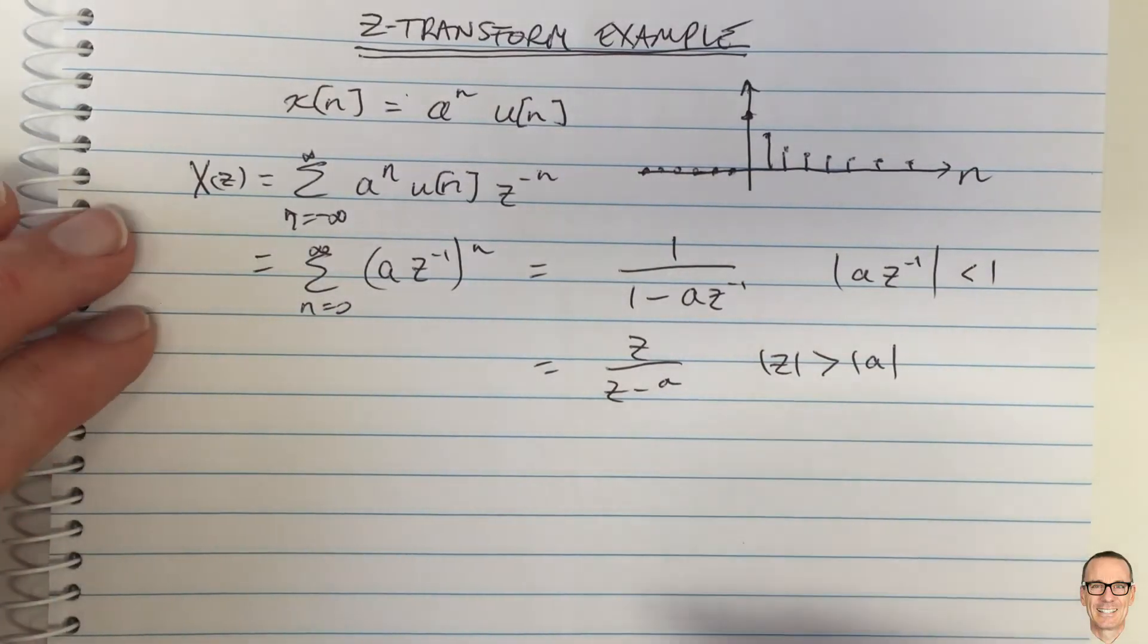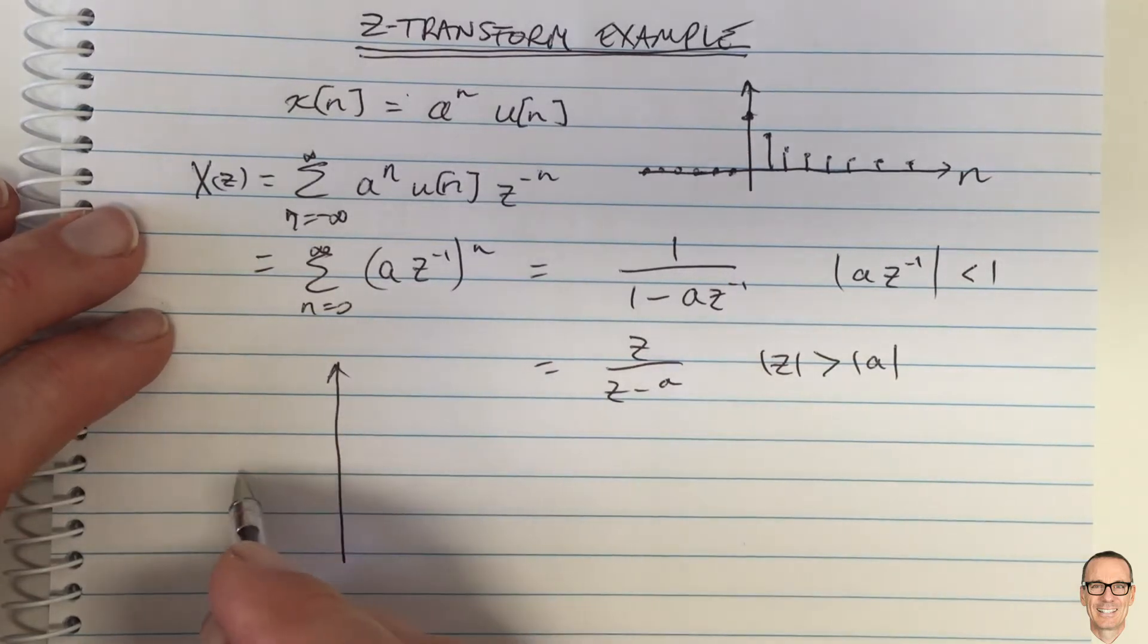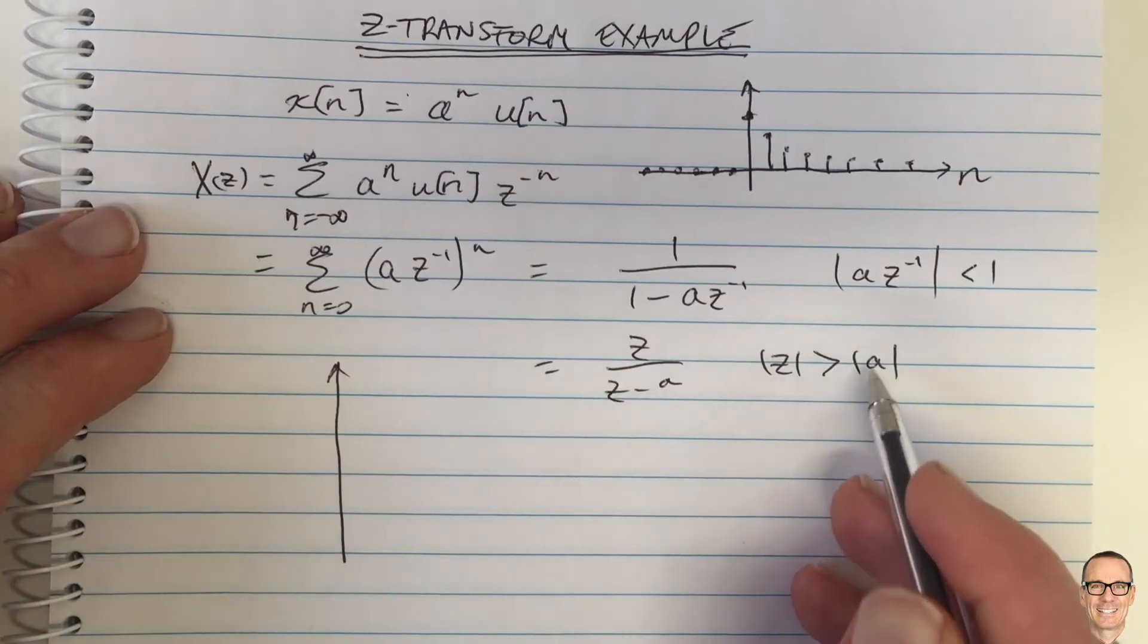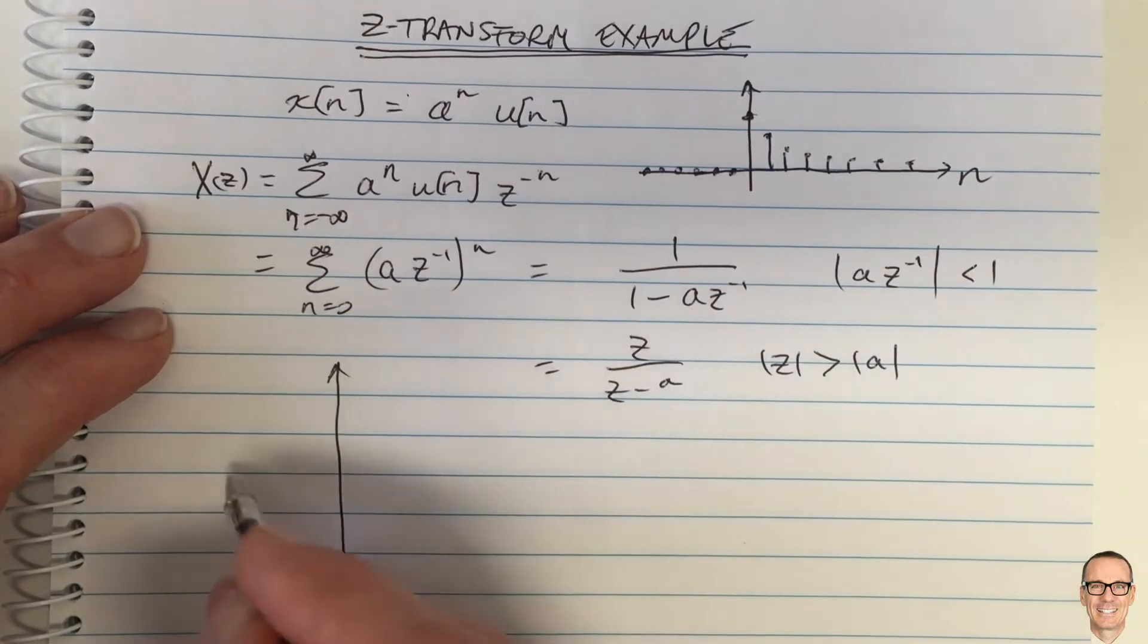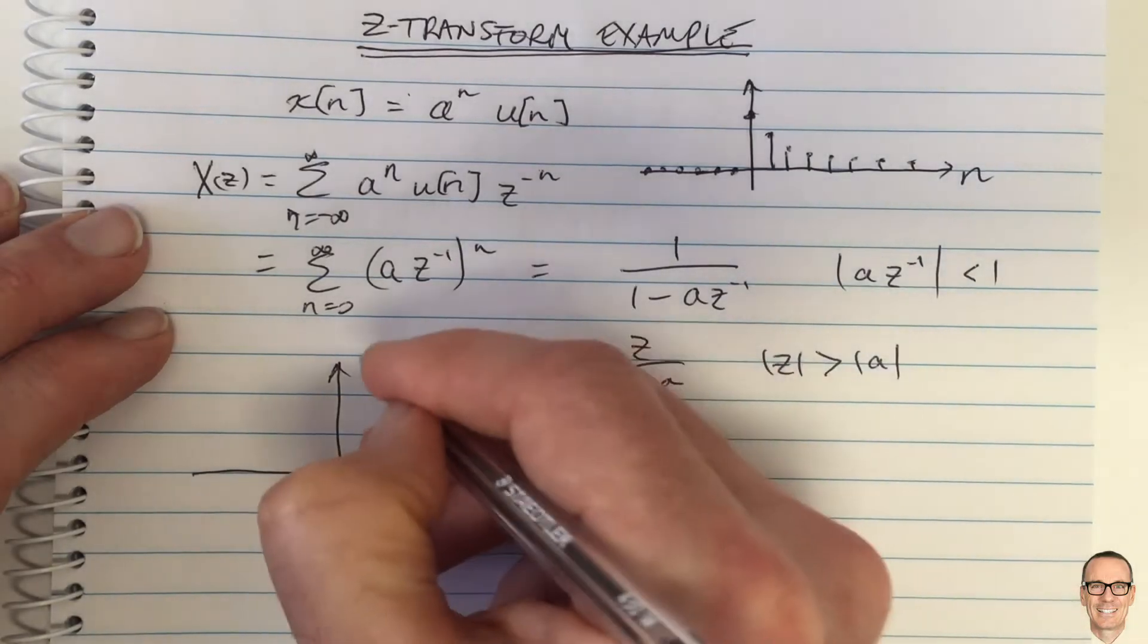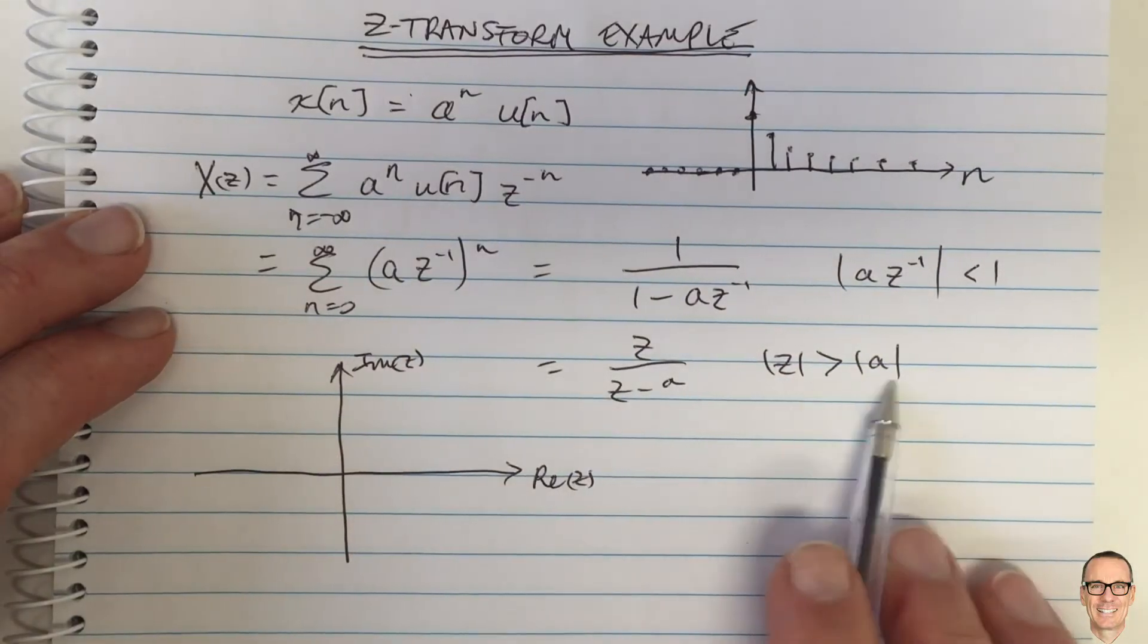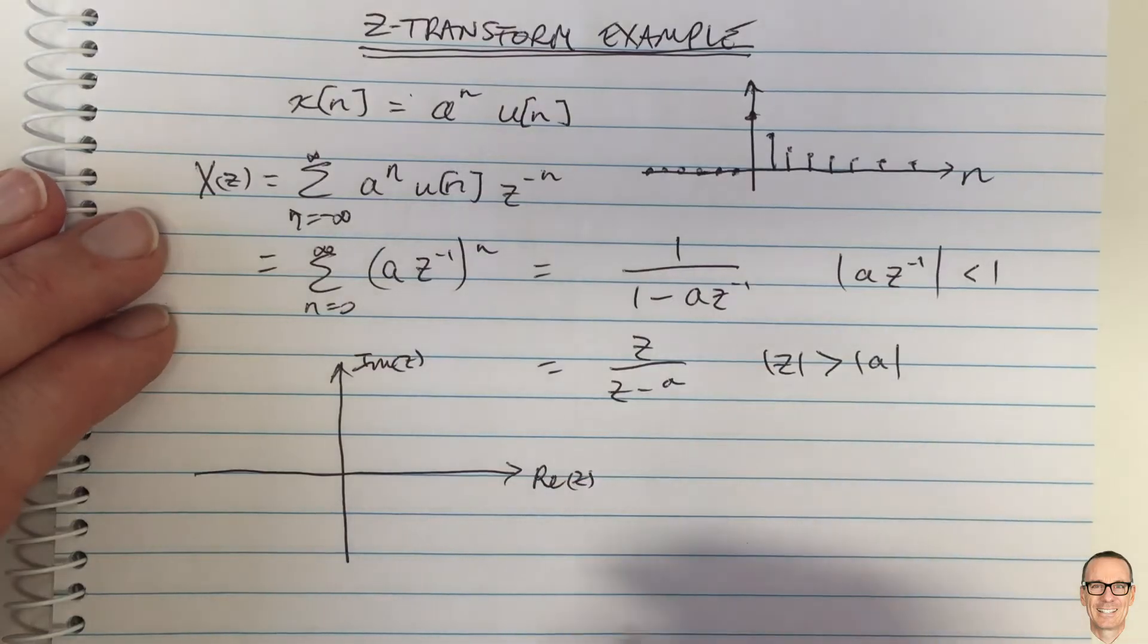So this is the answer, and then we also just consider what's happening in the Z-plane. Where does it converge, where does this hold? This summation converges as long as this holds. So in the Z-plane, we have the real part of Z, the imaginary part of Z. And the mod of Z being greater than the mod of a defines a circle.